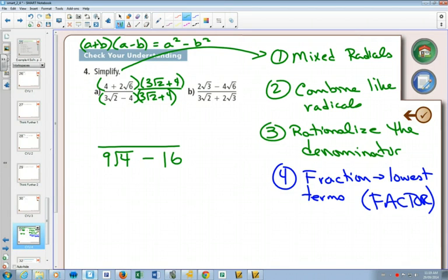On the top, we're going to have to foil. The first ones, 4 times 3 root 2. Remember, for multiplying radicals, you multiply the coefficients, or the numbers in front, and you multiply the radicals.